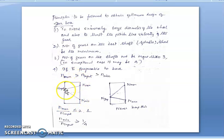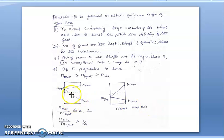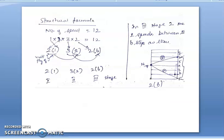The maximum attained speed should be greater than the input speed of the drive, and the input speed should be greater than the minimum required speed. The selected input speed should be such that it is closer to Nmax rather than Nmin, as being closer to Nmin is not a safer design. Based on these conditions, Nmax by Ninput should be less than or equal to 2, and the ratio of Nmin to Ninput should be greater than 1/4.